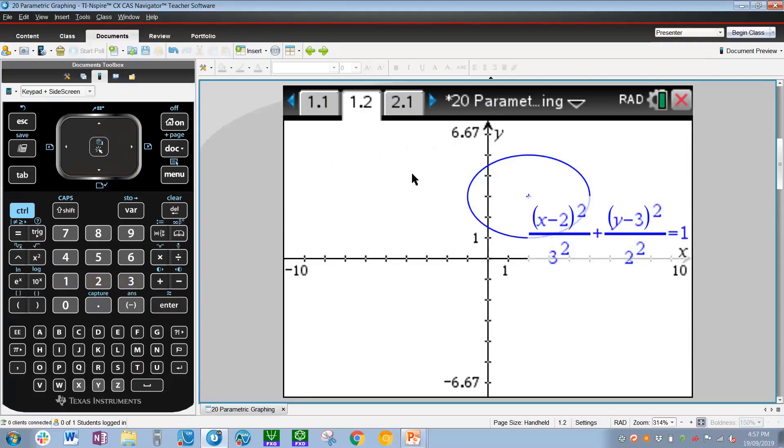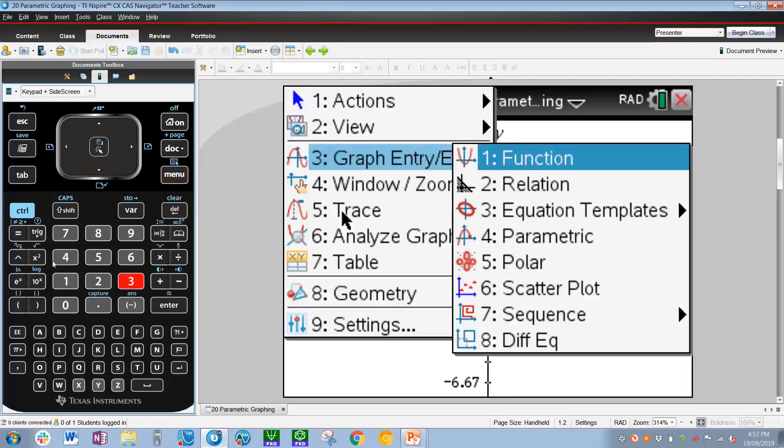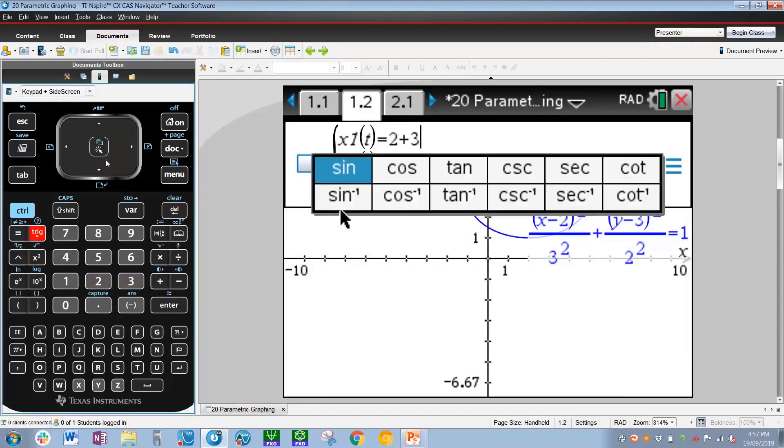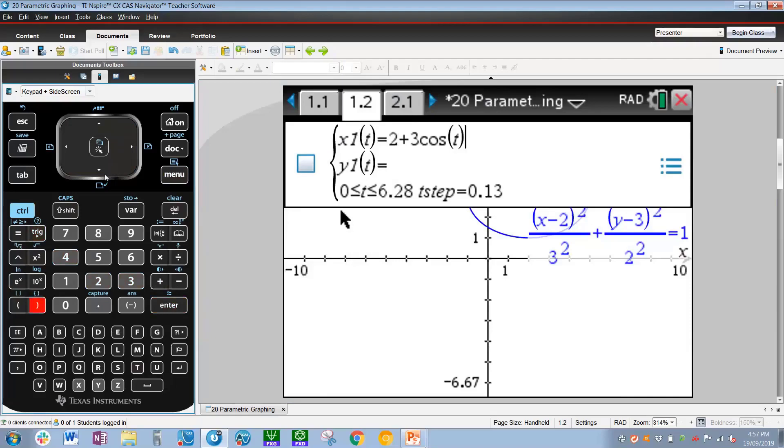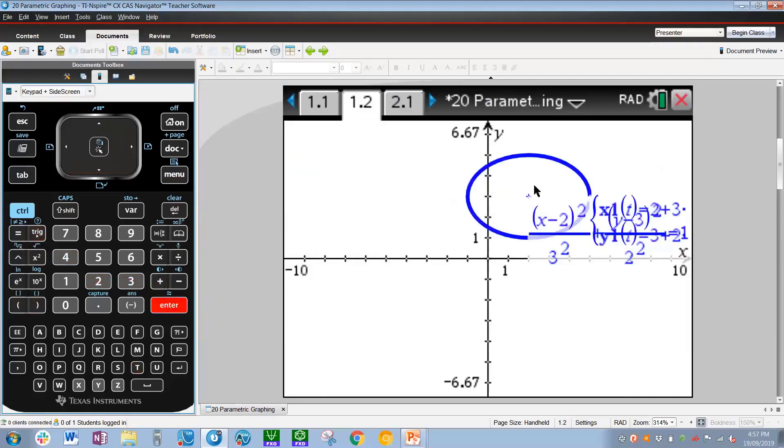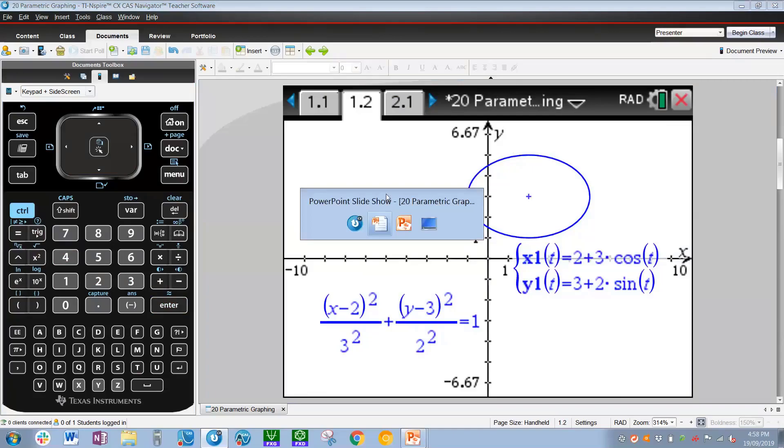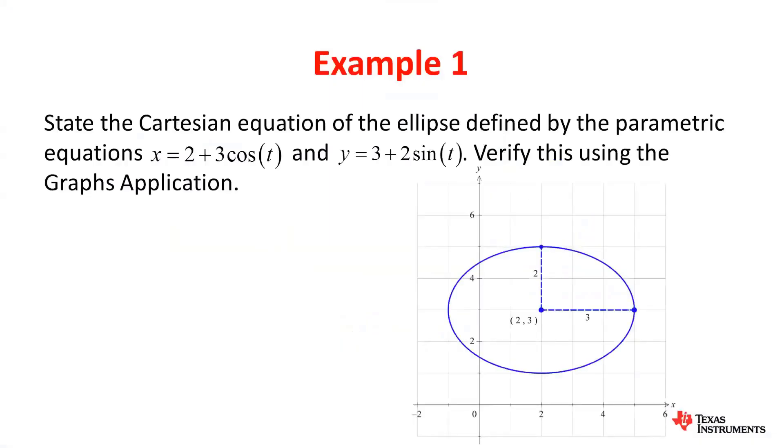To verify that this ellipse is the same as that given by the parametric, we can now change our graph entry menu again. So menu, 3 for graph entry, 4 for parametric. Now we're going to type in the parametrics from before. 2 plus 3 trig cos of t for the x, and 3 plus 2 trig sine of t for the y. Hit Enter. As you can see, the two graphs are pretty much coincidental. They are on top of each other. So we have now verified that the Cartesian equation, which was x minus 2 squared on 9 plus y minus 3 squared on 4 is equal to 1, is the same equation which produces the same graph as the parametric equations from before. That's the same graph there, center at 2, 3, semi-major axis of 3, and a semi-minor axis of 2.